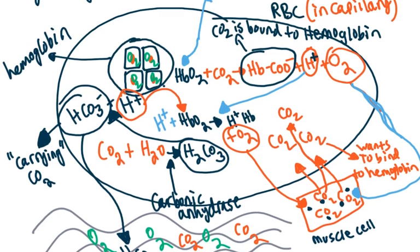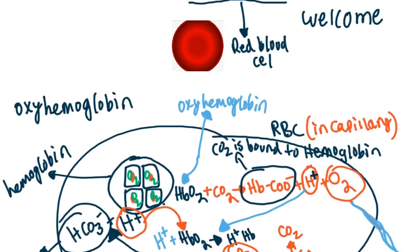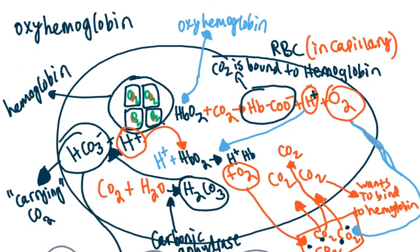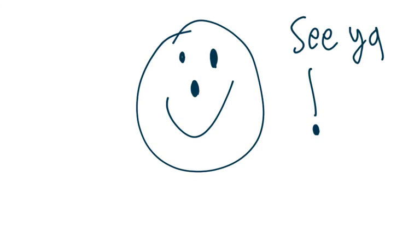That's it for this video. These are the basic intracellular erythrocyte reactions. We'll make a part two video to see what happens when we get to the lungs, and then we'll start talking about the Bohr effect and the Haldane effect. Make sure to tune in to future videos, like and subscribe, and stay safe.